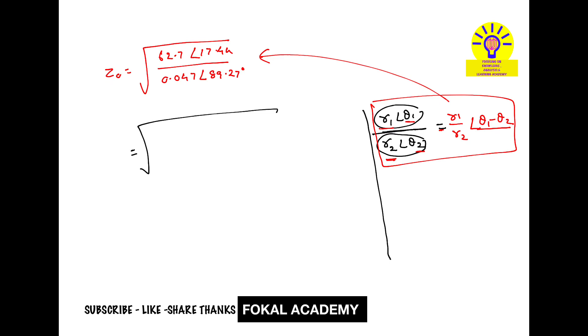By simplifying this, I'll directly apply the square root in the calculator, and we get 36.52 with a phase angle of -35.9 degrees. This is in polar form.